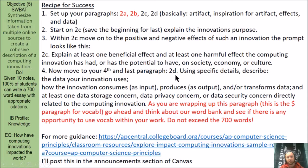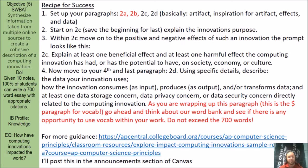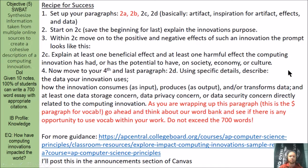Then move on to your fourth and last paragraph, 2D. Using specific details, describe the data your innovation uses — how the innovation consumes as input, produces as output, and/or transforms data — and address at least one data storage concern, data privacy concern, or data security concern directly related to your innovation. This is the money paragraph for vocabulary. I'll provide a word bank near the end of this slideshow. If you want more guidance, you can also read the College Board's suggestions for approaching this performance task.